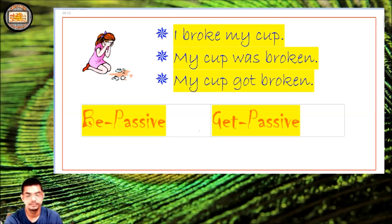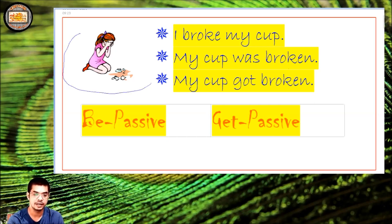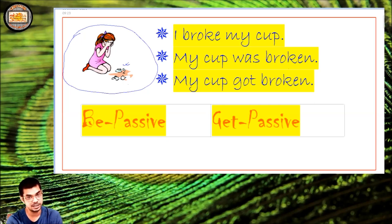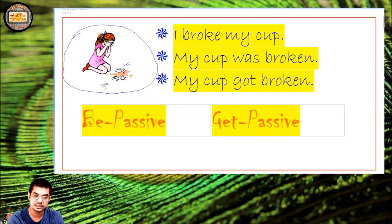Before we say anything, it will be better for you to focus on this particular picture. You'll see that there's a girl and she is weeping. What is she weeping for? She had broken a cup. She had broken a cup in the morning — her mother had a bed tea, she accepted it, and then suddenly the cup fell and it was broken. Now, what sentences will she produce?